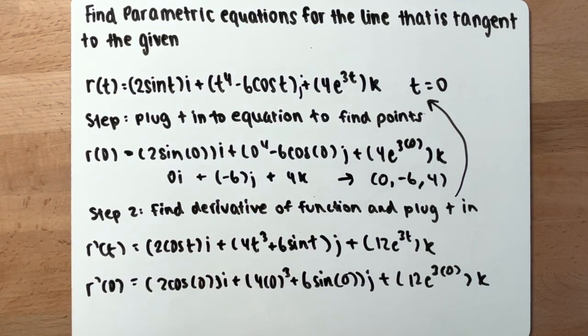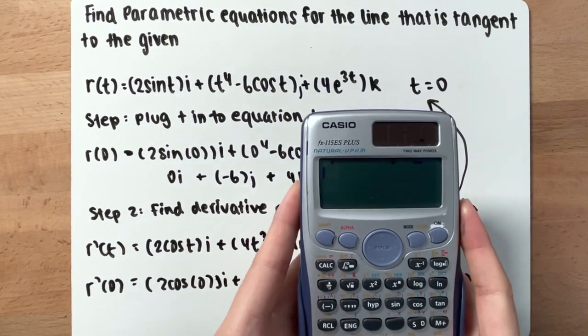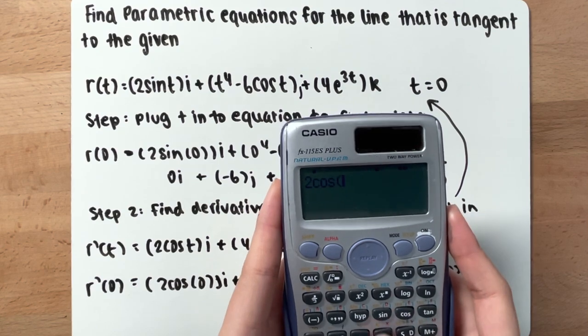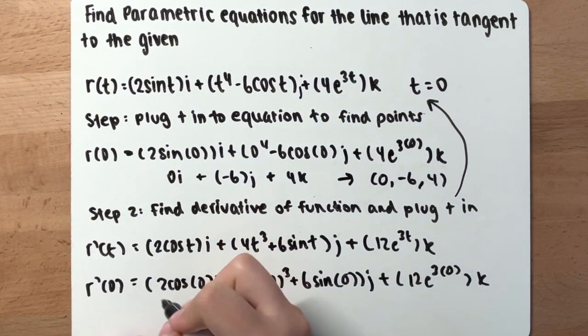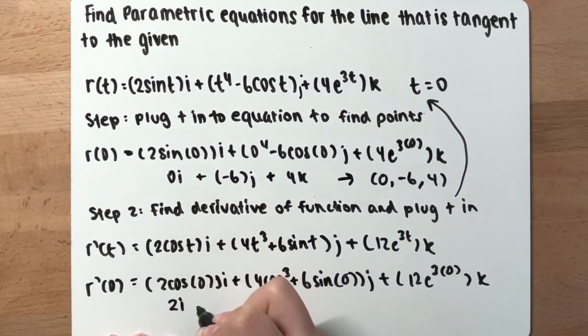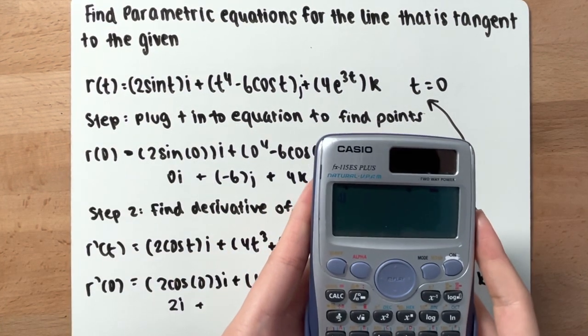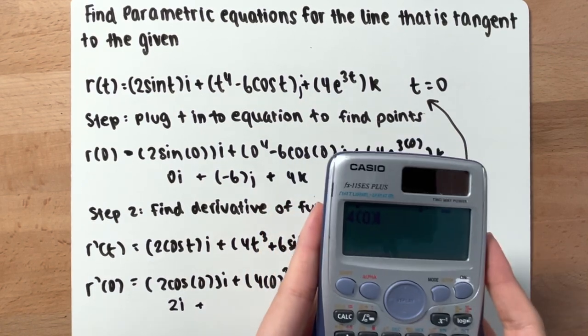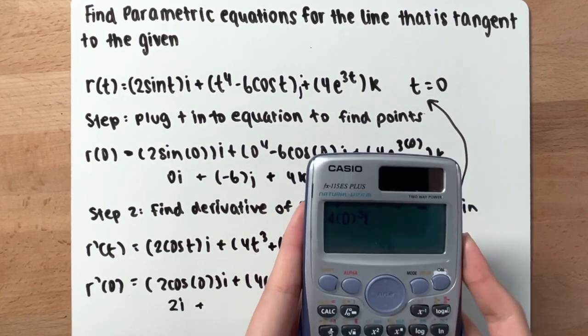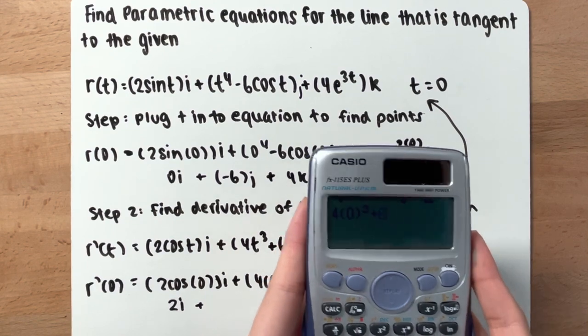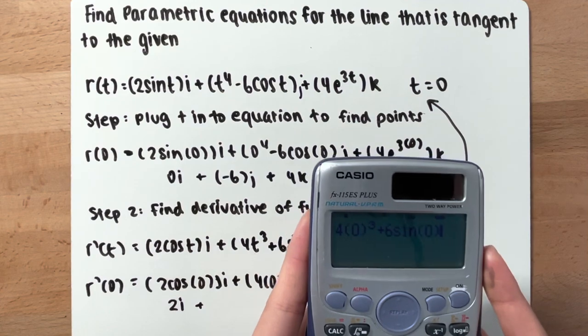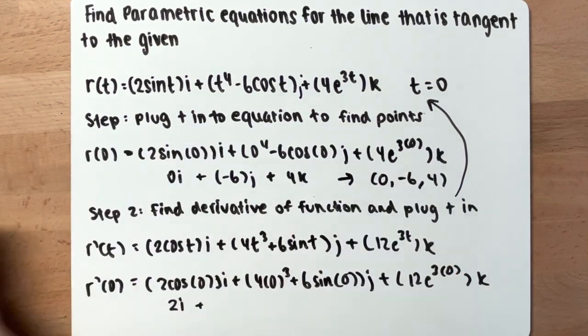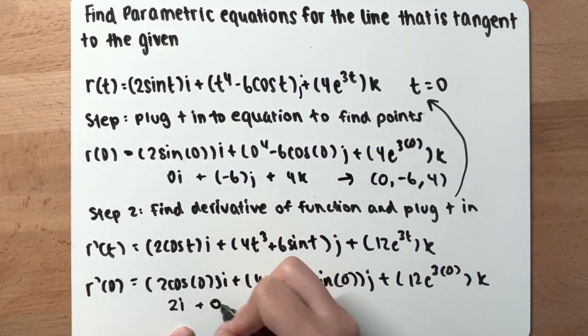Okay, now you plug it into a calculator, 2 cosine 0, you have 2, so 2i plus 4 times 0 to the 3rd power plus 6 sine 0, you have 0j.